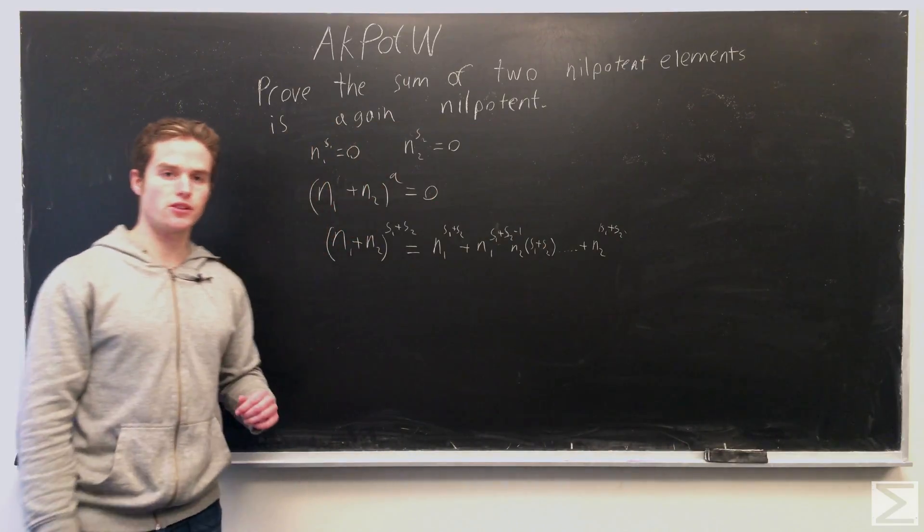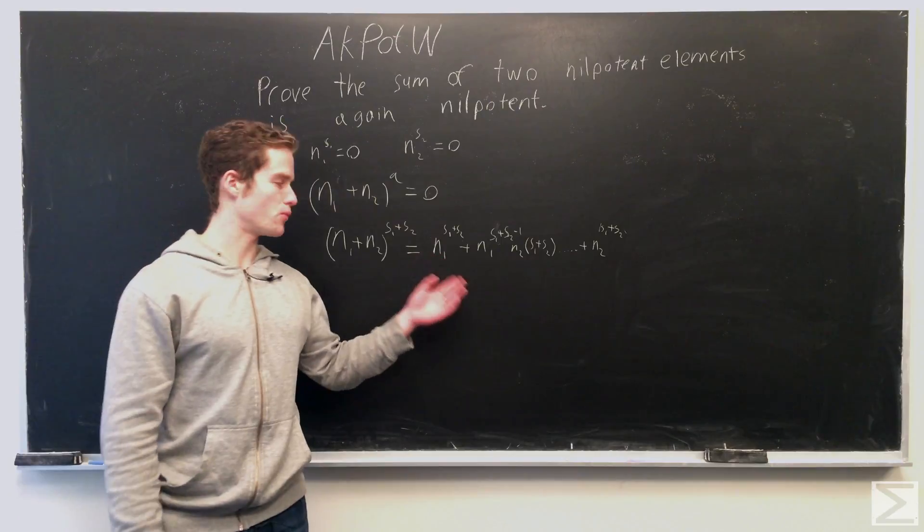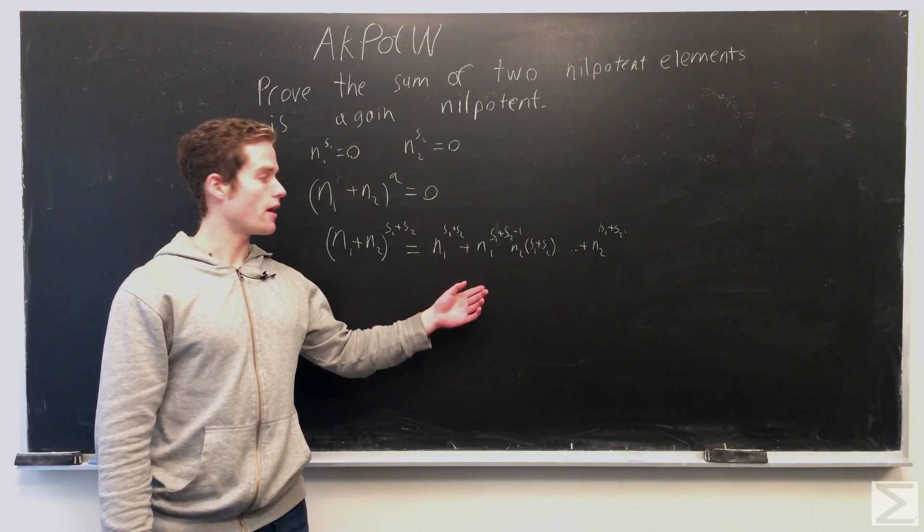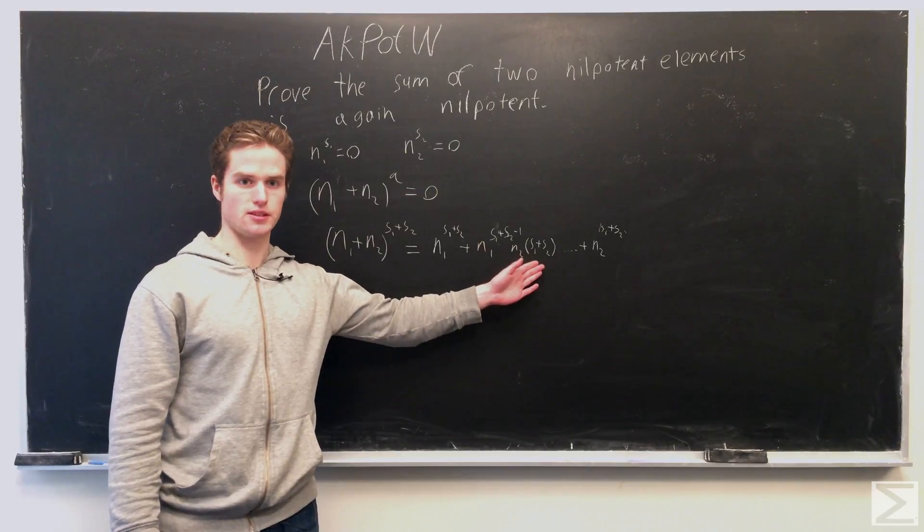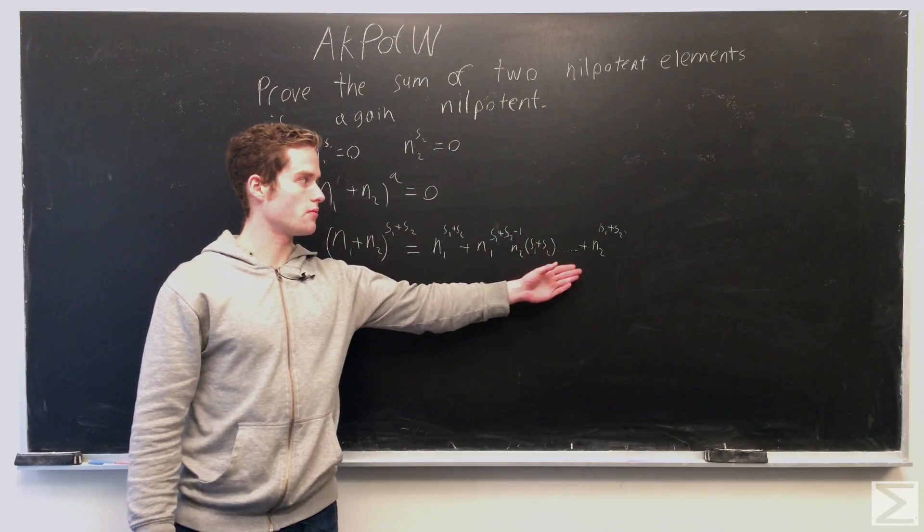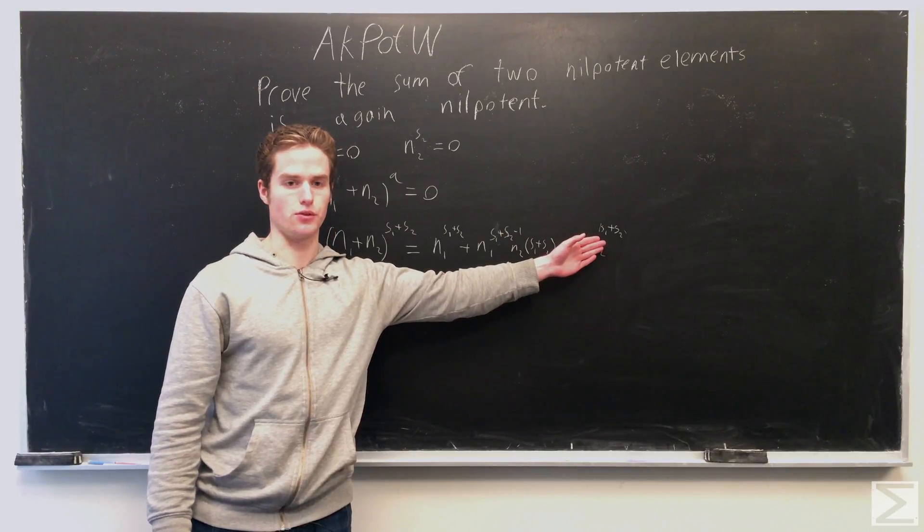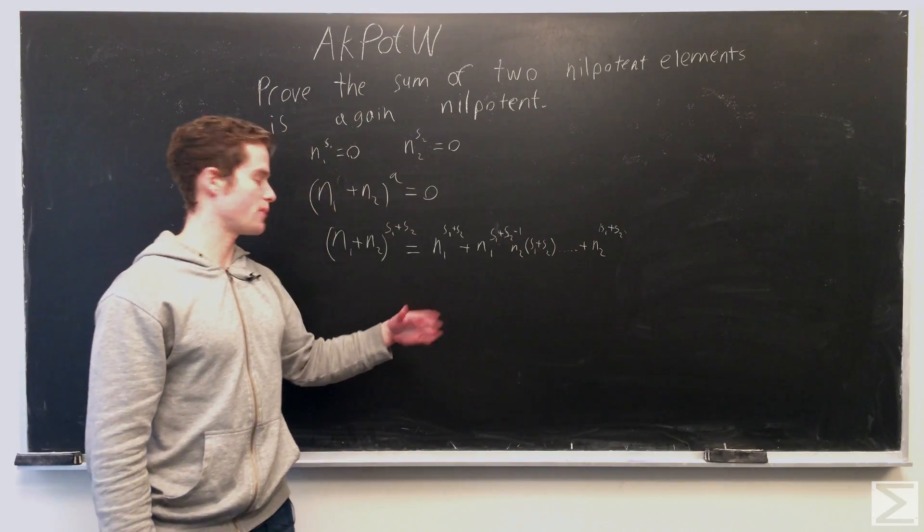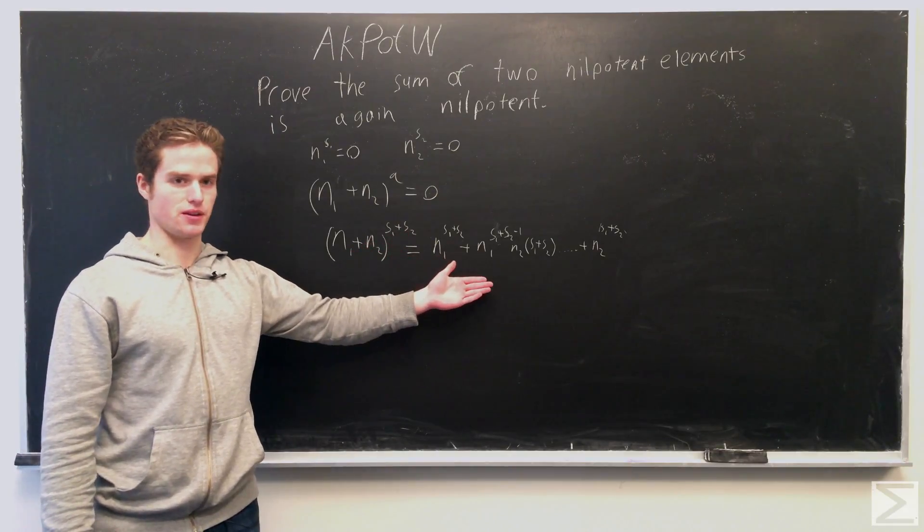So if we set q equal to s1 plus s2 and then expand out, we get n1 to the s1 plus s2, n1 to the s1 plus s2 minus 1 times n2 times s1 plus s2, and so on, until we get n2 to s1 plus s2. And this is from the usual expansion of some product to some power. We can expand this way.